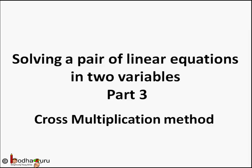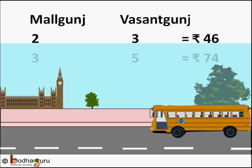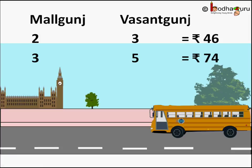Let us take an example. From Sundarpur, Anand bought 2 tickets to Maul Ganj and 3 tickets to Vasanth Ganj. The total cost is Rs. 46. Whereas Rajat bought 3 tickets to Maul Ganj and 5 tickets to Vasanth Ganj. His total was Rs. 74. Now can we find what is the bus fare of a single ticket to Maul Ganj and a single ticket to Vasanth Ganj?